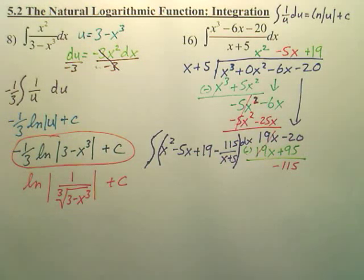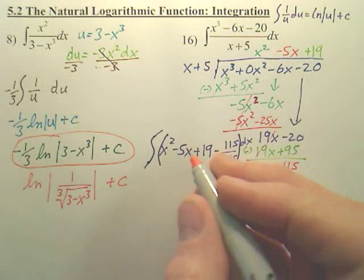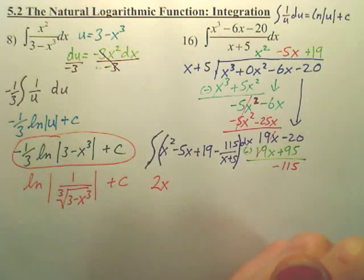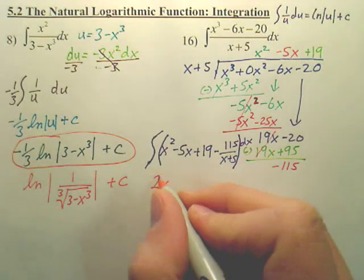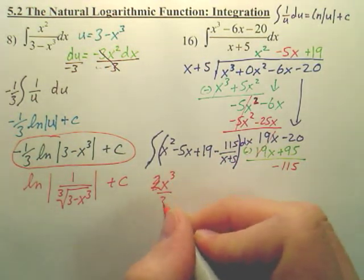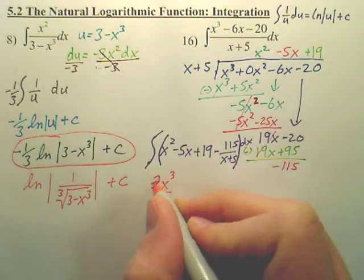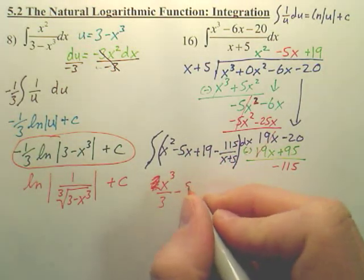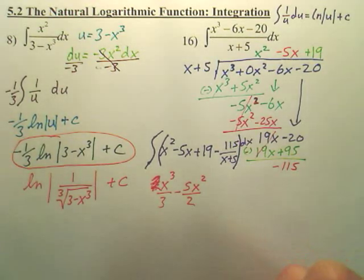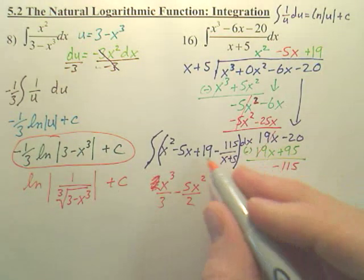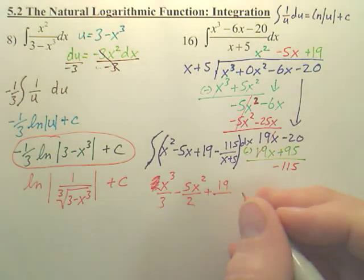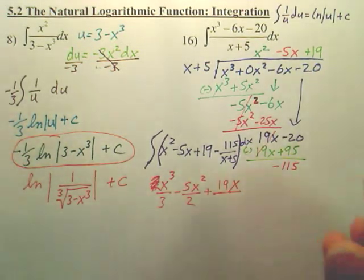Now you can integrate that. What's the integral of x squared? It's x cubed over 3. Have you ever derived when you should integrate? Happens a lot. And then the integral of negative 5x is negative 5x squared over 2. And then the integral of 19 is 19x. Bad day for me.